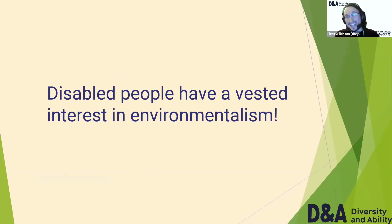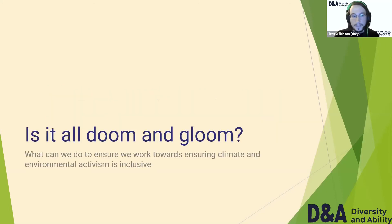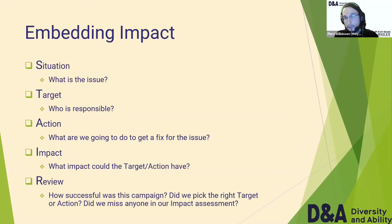And finally, whilst this is all doom and gloom-ish, I do have a bit that's about how to fix things. Disabled people have a fundamentally vested interest in environmentalism, because we are disproportionately impacted by a lot of aspects, which means that we are very much wanting to fight environmental disasters and fight climate change — it's based on our survival as well. It's not all doom and gloom, I promise you.